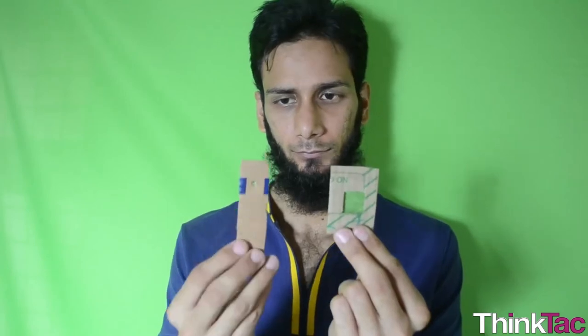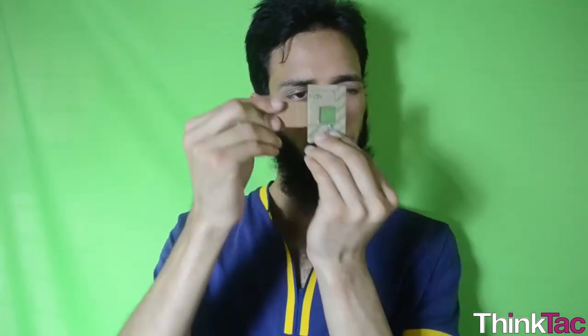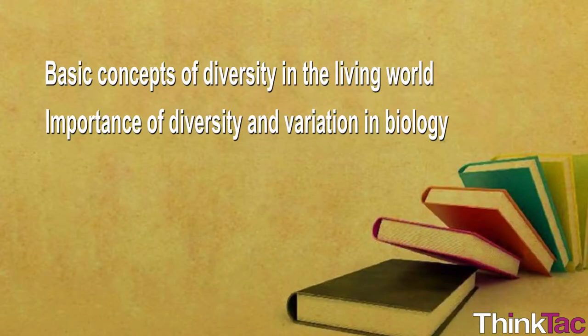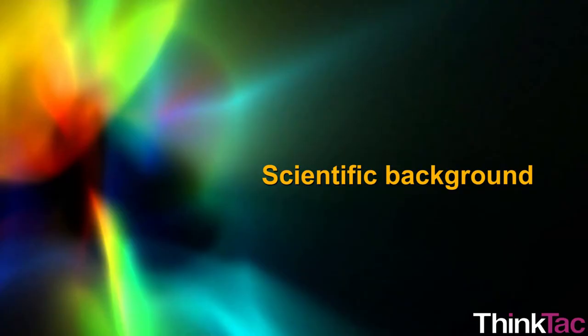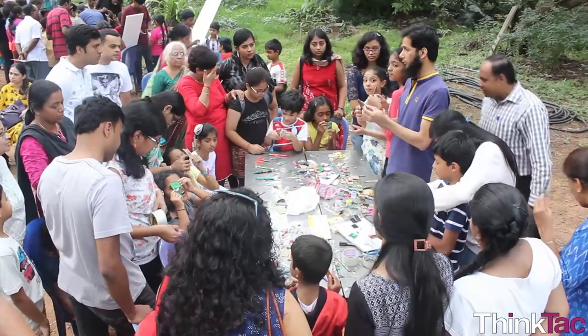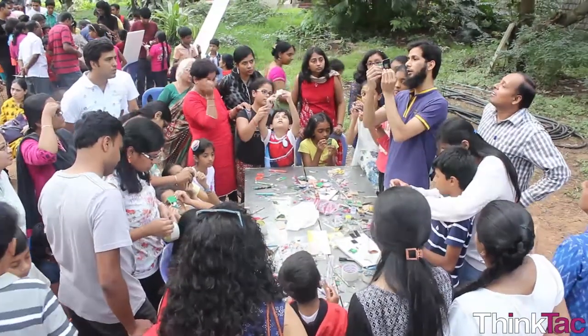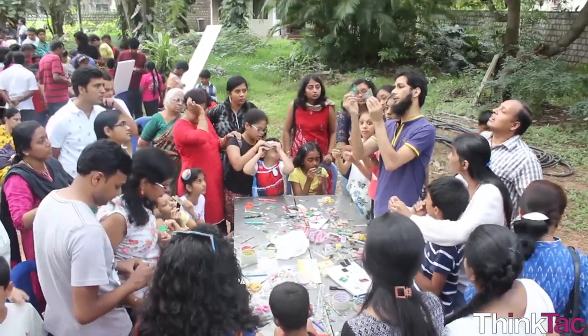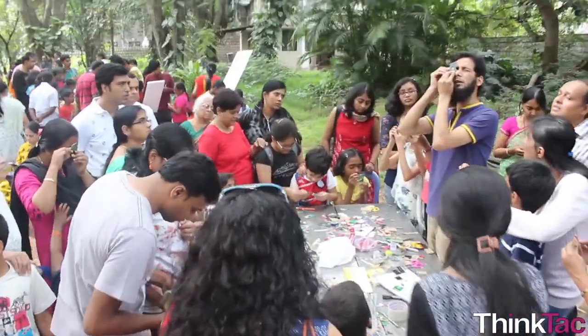You also know now that varying the distance between your eye and the microscope changes the image. This activity has also introduced you to the basic concepts of diversity in the living world. Later on, you will also understand the importance of diversity and variation in biology. This activity is one of the simplest ways to understand very important scientific principles. The concepts that you have learned by doing this activity will be applicable to many other experiments that you do in your curriculum.